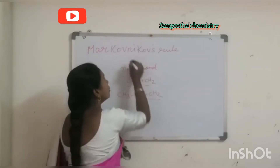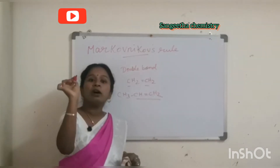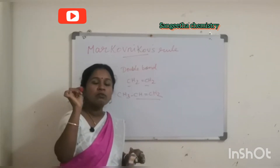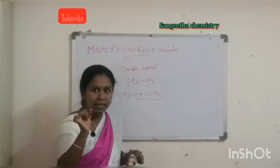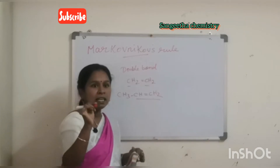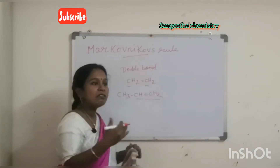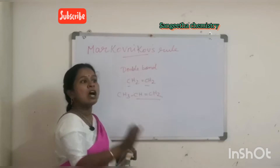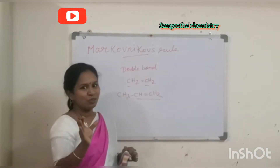For unsymmetrical alkenes, when addition reactions are carried out, we use Markovnikov's Rule. So what is Markovnikov's Rule? For an unsymmetrical alkene, the addition reaction is done with the help of a rule known as Markovnikov's Rule.